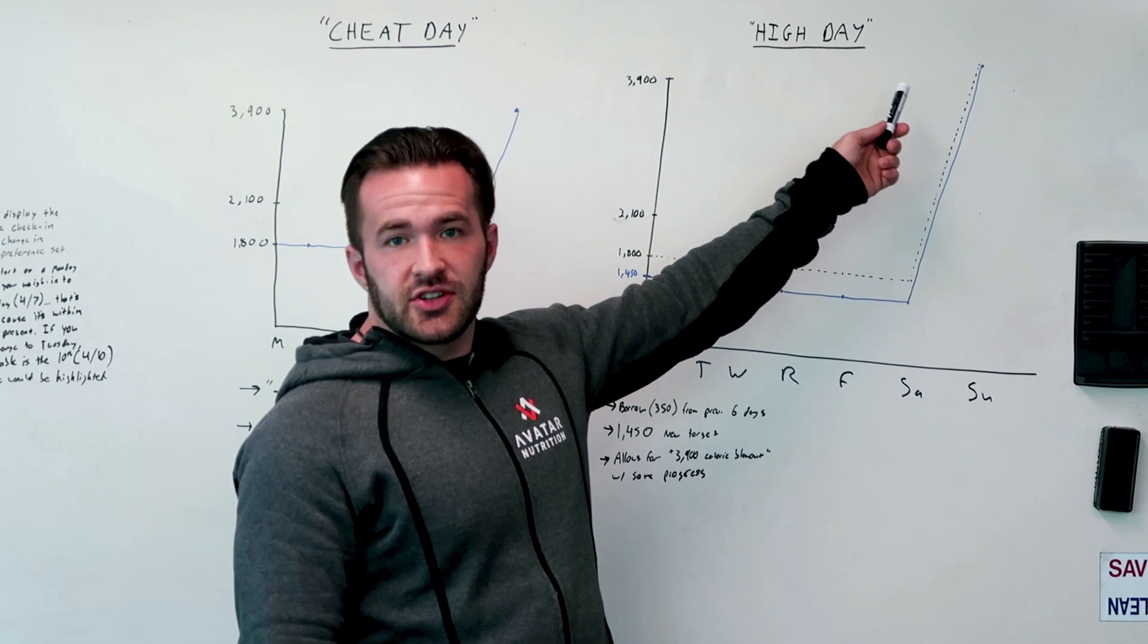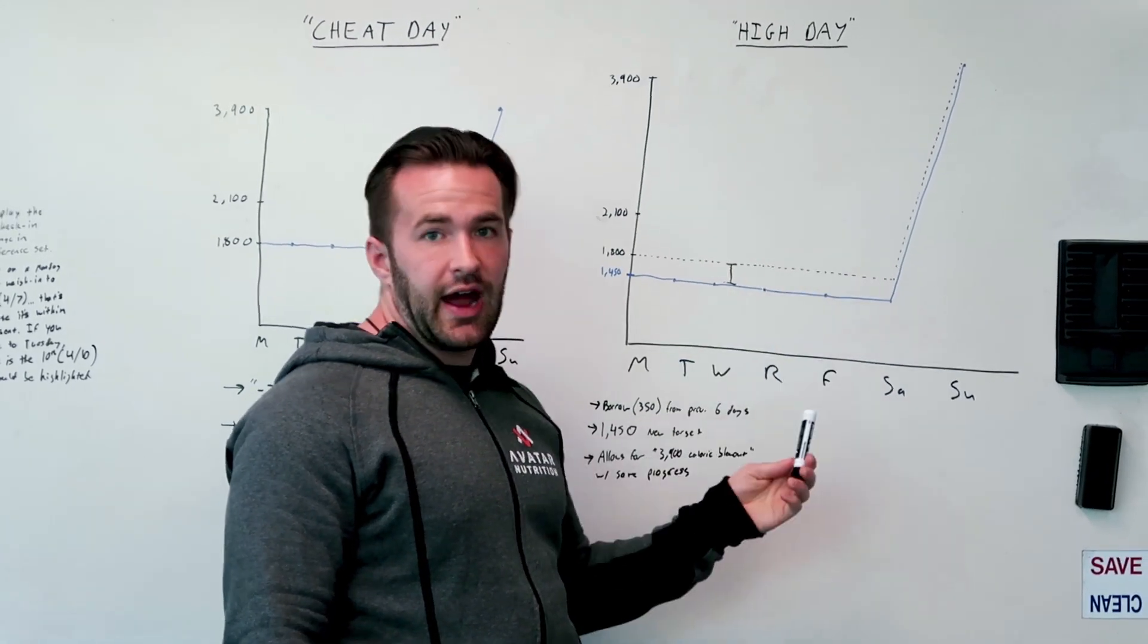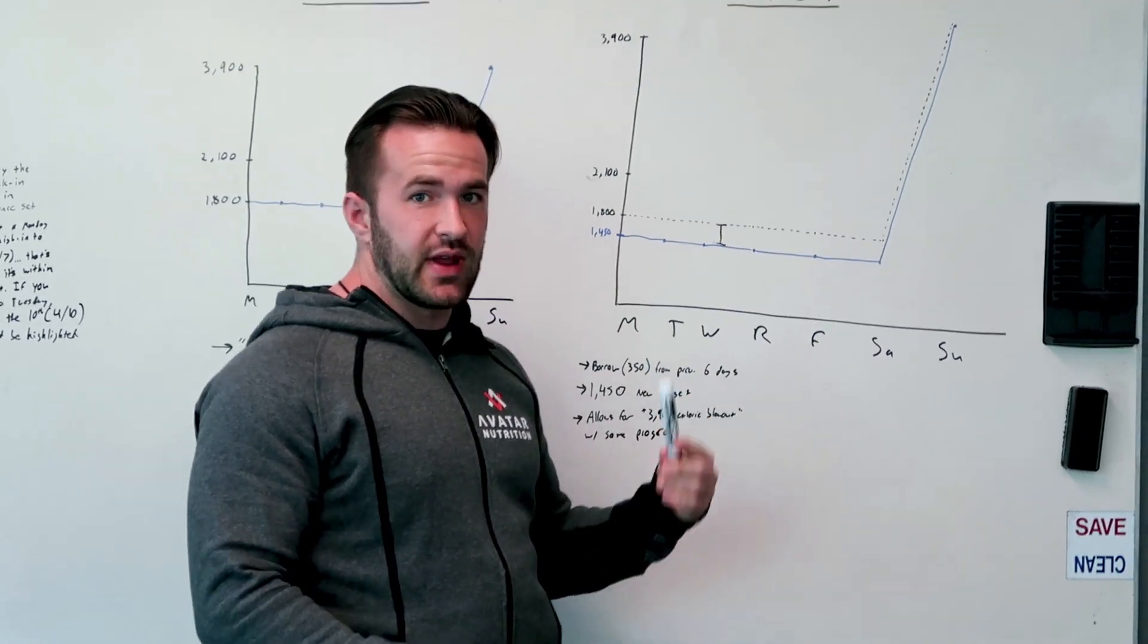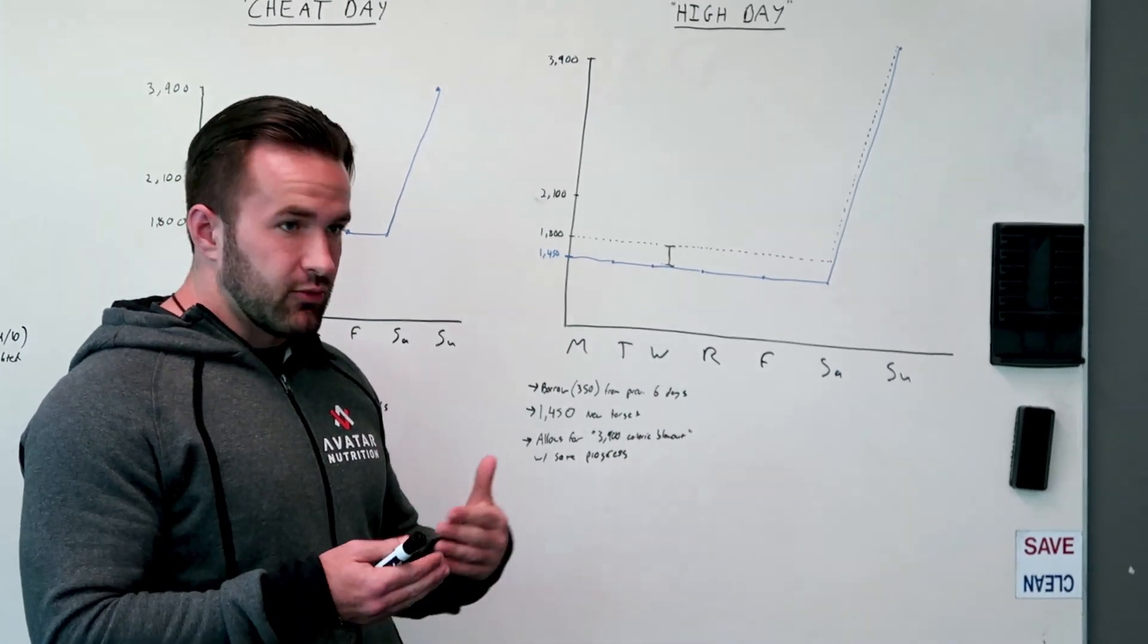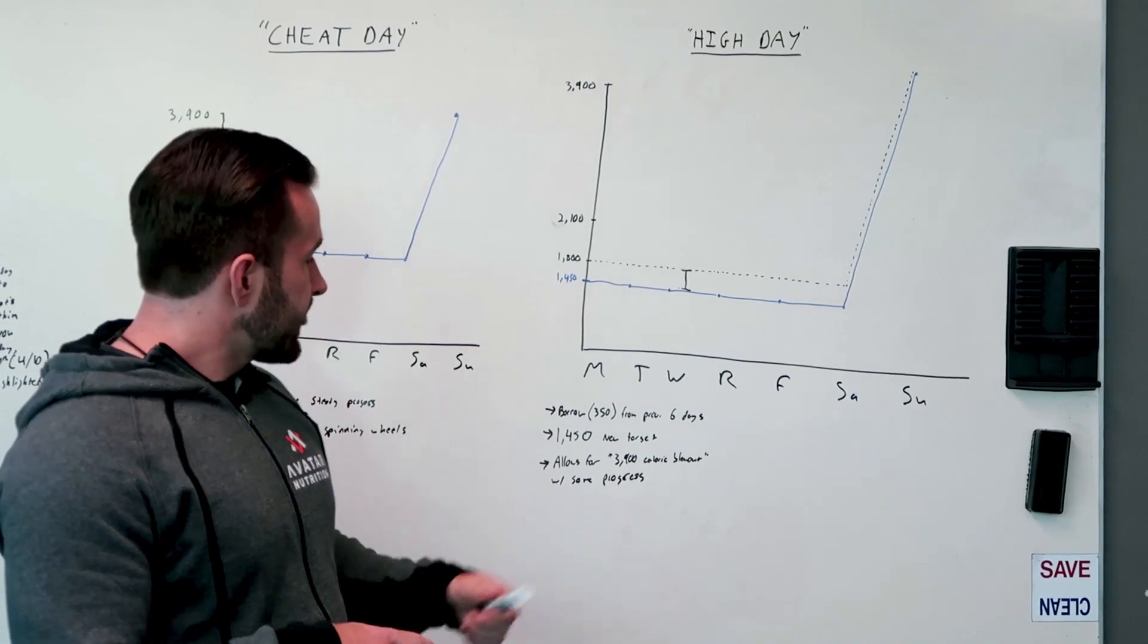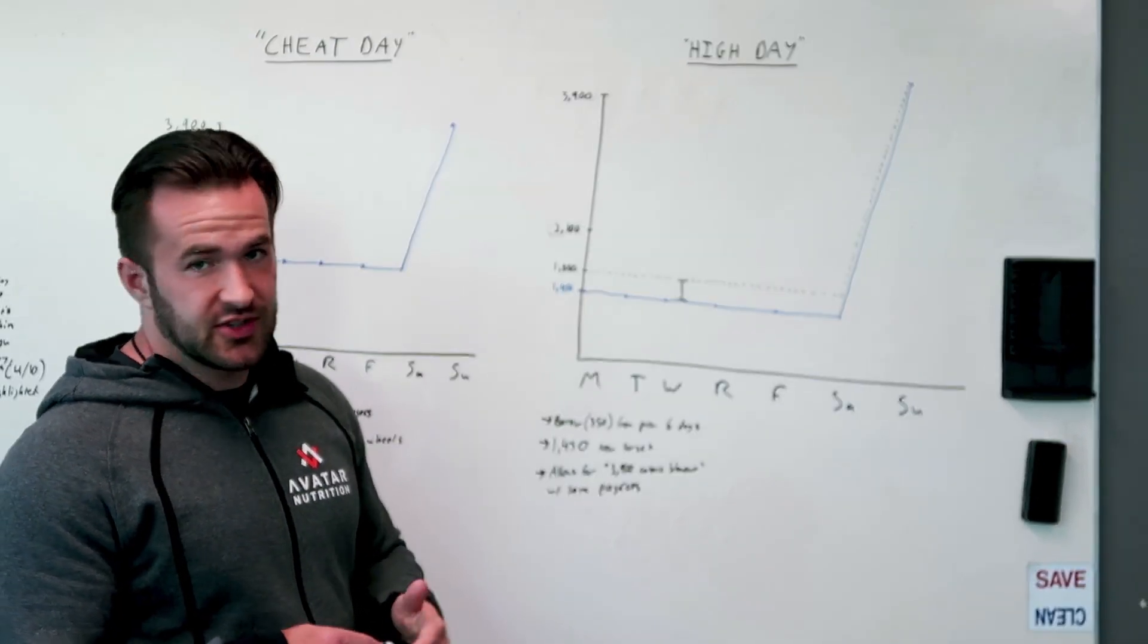So for a high day, you're actually going to borrow some additional calories from your other six days throughout the week. So that way you can make it up and do the same. So in this case, if you want everything to be right where it needs to be with the average throughout the week, you need to borrow 350 from each day.